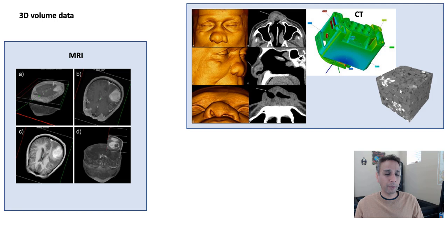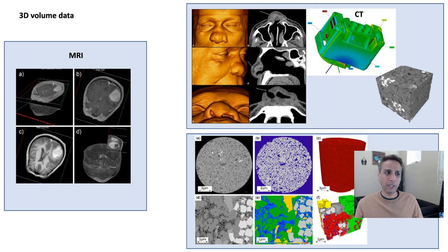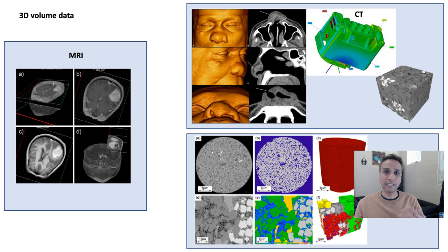You can also work with FIBSEM datasets — focused ion beam scanning electron microscope — where you take a volume, image the surface, cut it with an ion beam, image again, and so on. This is common in 3D electron microscopy. Any of these, as long as you have your 3D volume, you should be able to follow this process.